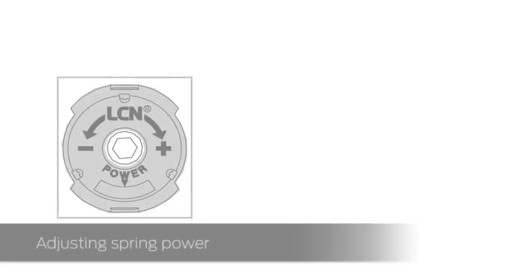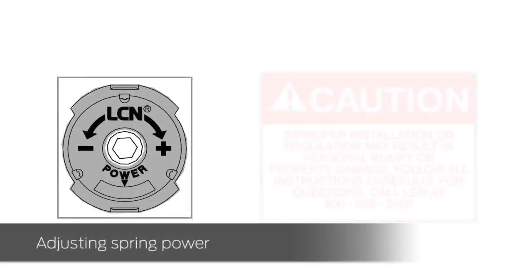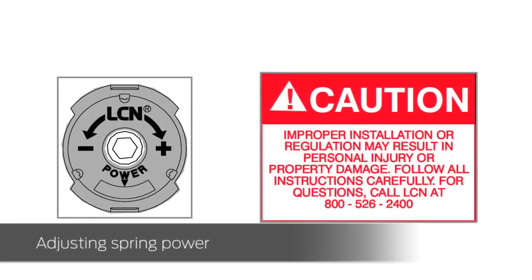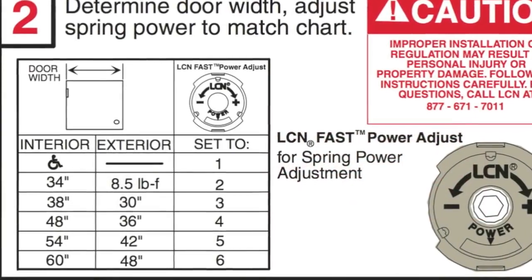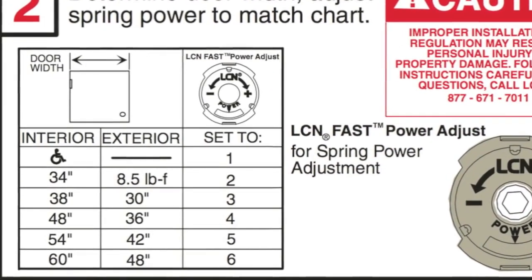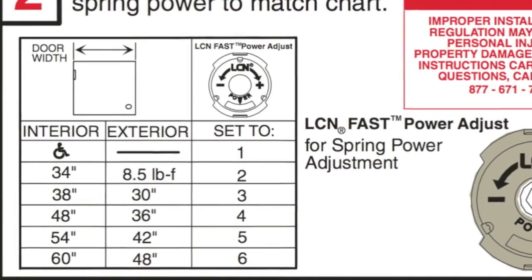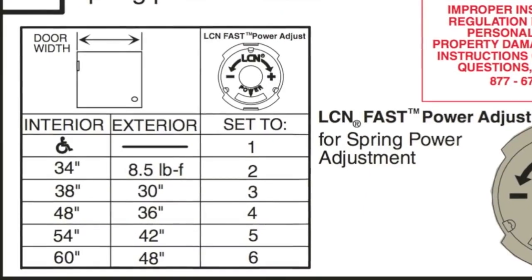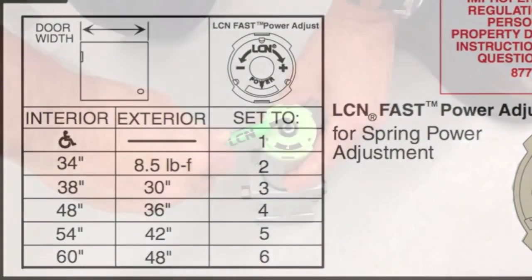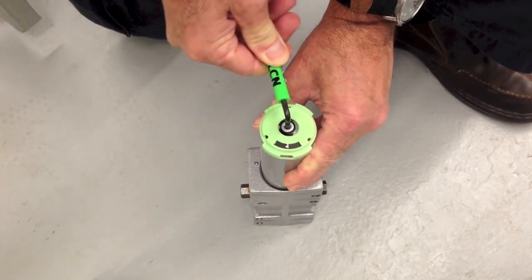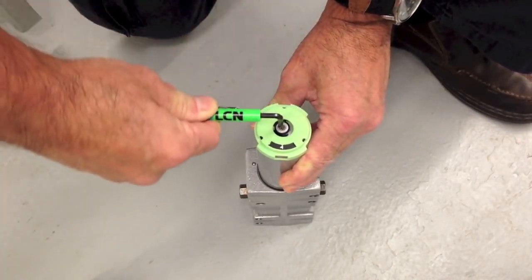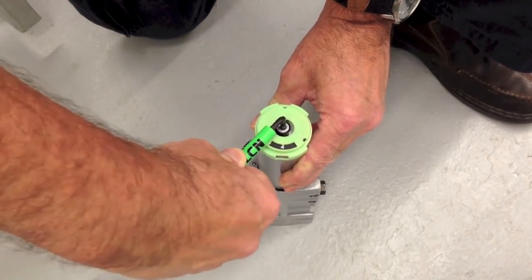The LCN 4040 XP spring power can be adjusted to provide proper closing force for your door. Please note, an improperly adjusted spring may result in personal or property damage. Using the chart in the instructions, determine the spring power setting based on the door width and the location of the opening. Adjust the spring to the correct number using the five thirty-seconds inch hex wrench. Turn the screw until the proper number appears in the power window.